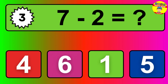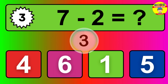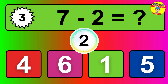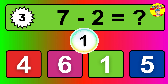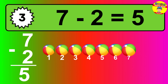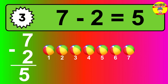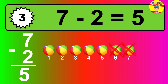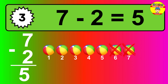Question 3. 7 minus 2 equals what? So the answer is 7 minus 2 is 5. Let's count it: 1, 2, 3, 4, 5.